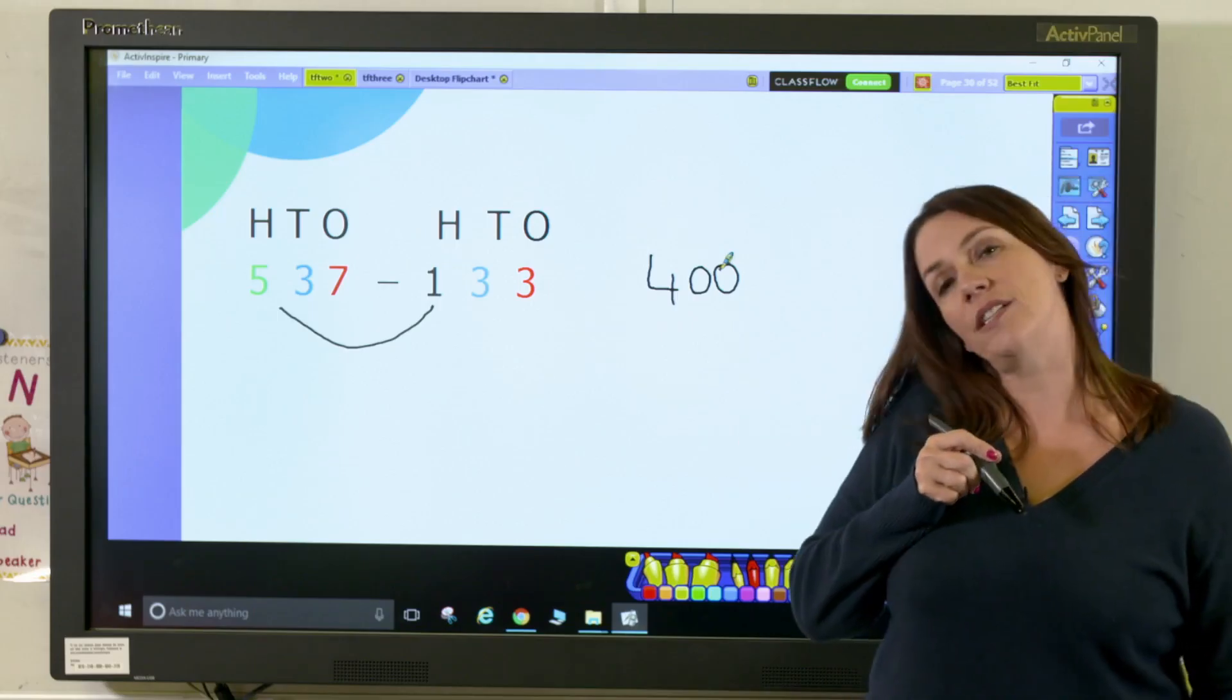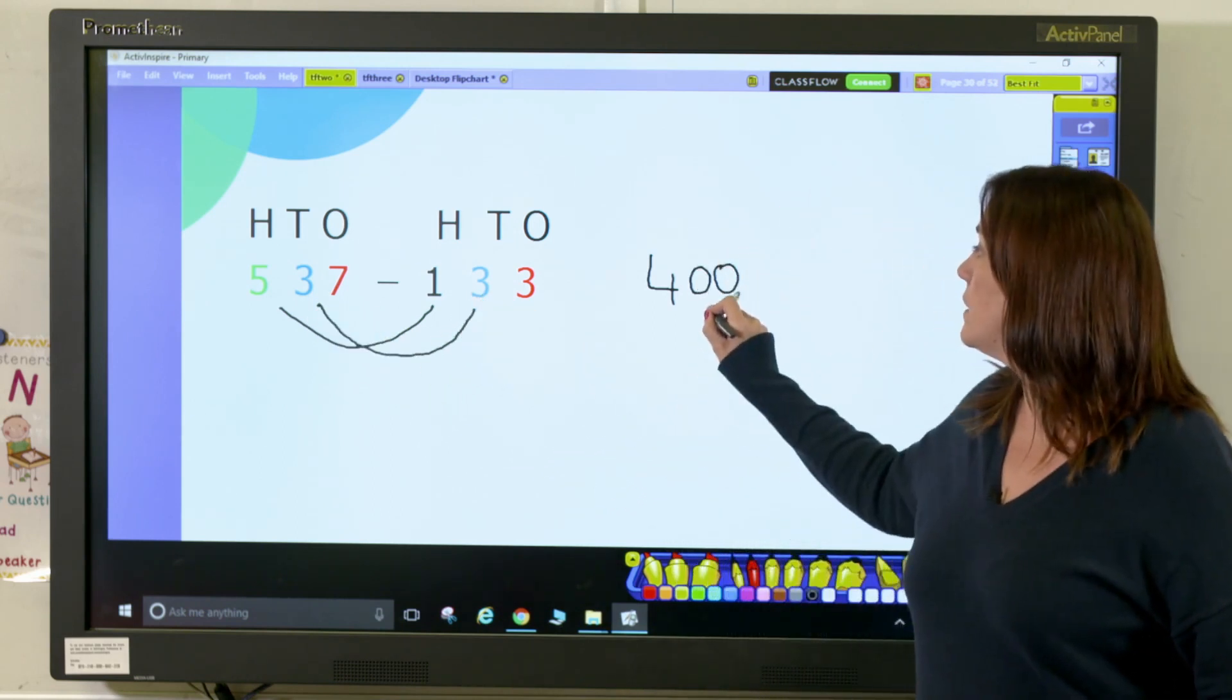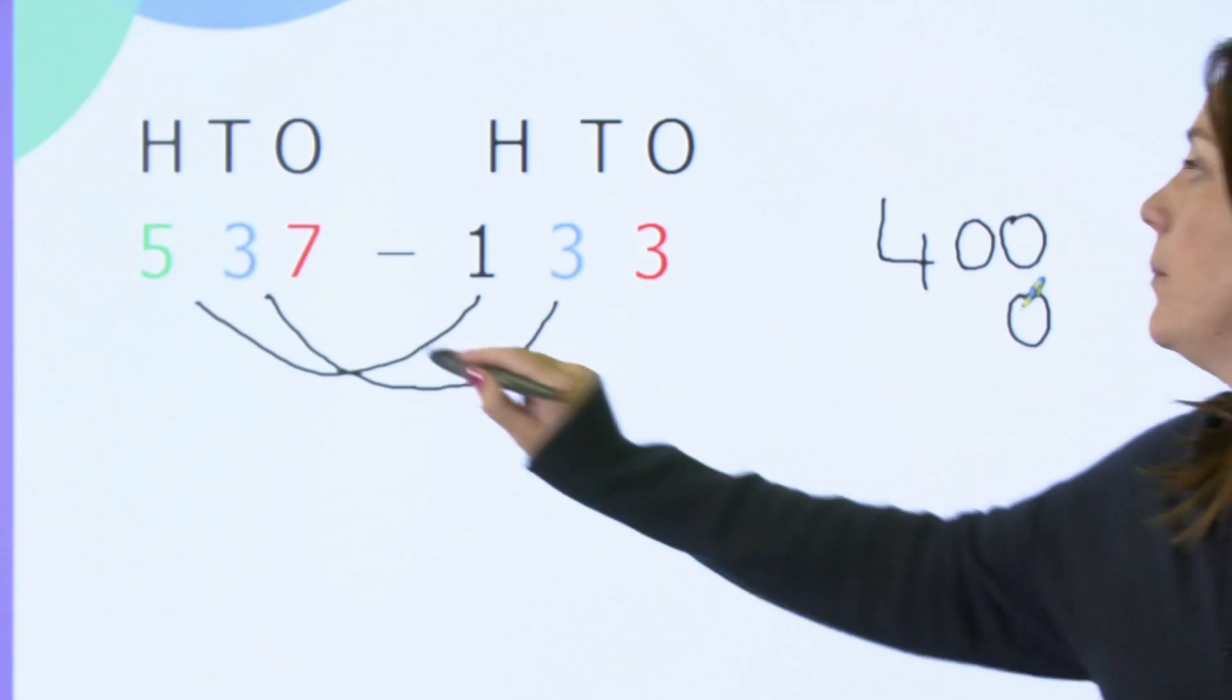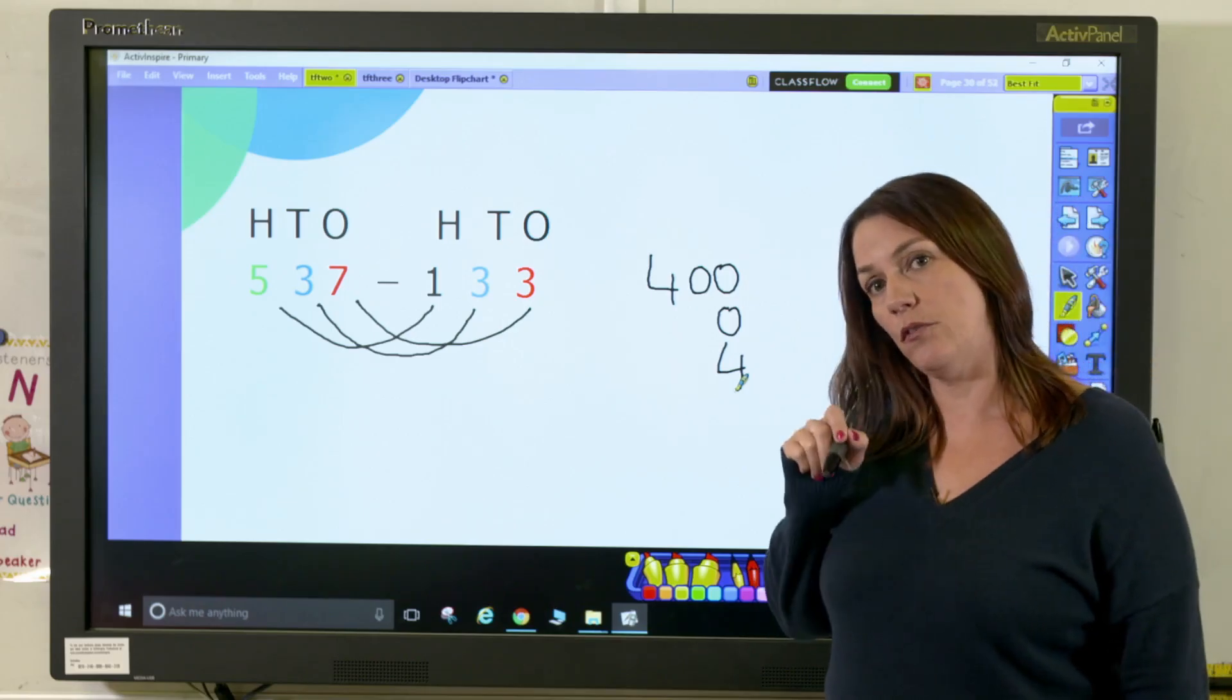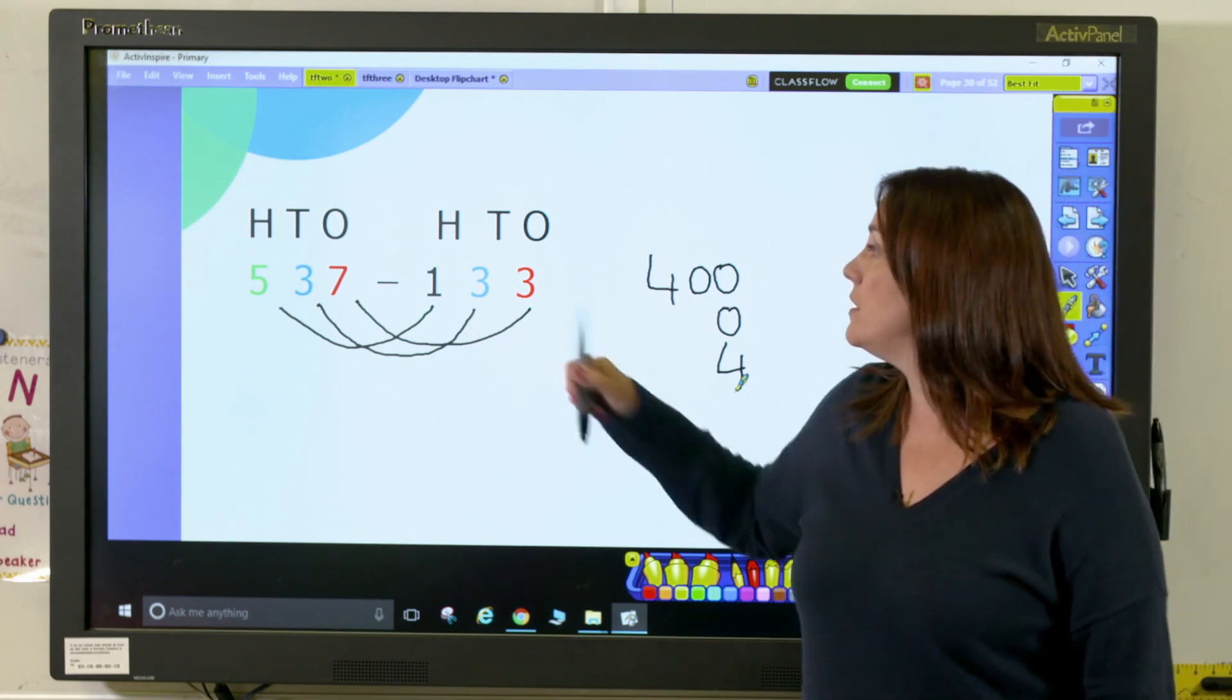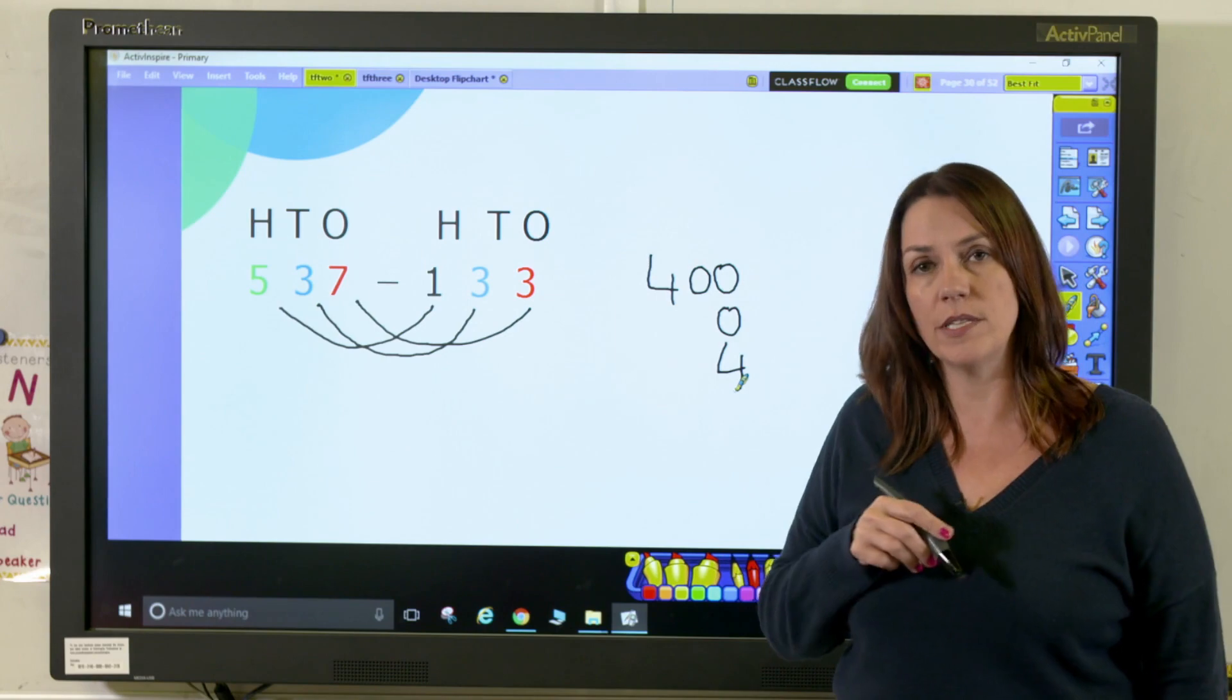Then I have 30 take away 30 which will give me zero. I'm going to put the zero on there. And then I have 7 take away 3 which is going to give me 4. So I can quickly see that my answer is 404. Now some children will be able to spot straight away that 37 take away 33 will actually give us an answer of 4 and we'll come to the answer quicker.